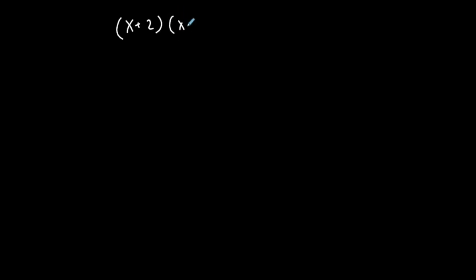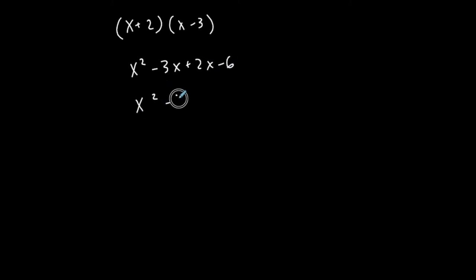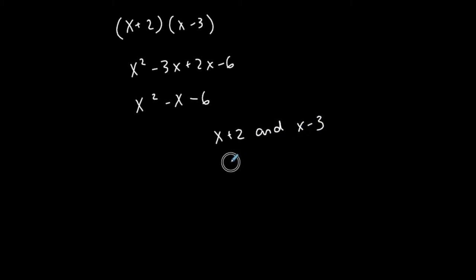Now, let me take it into quadratics because everybody remembers basic FOIL and things like this. If I go and FOIL this out — first, outer, inner, last — I'm going to do it fast because that's not what this video is about. Notice that if I take x plus two and I multiply it by x minus three, I get the trinomial x squared minus x minus six. That means that x plus two and x minus three are factors of x squared minus x minus six.